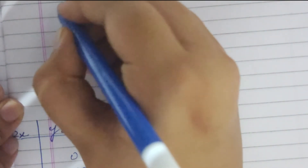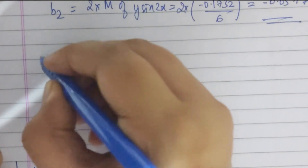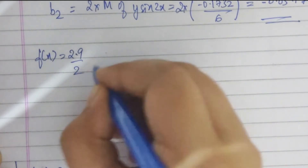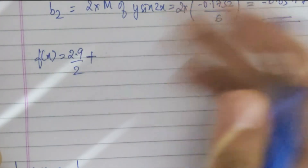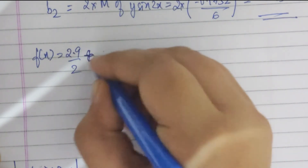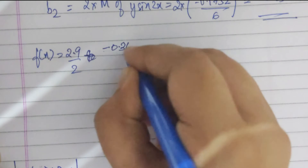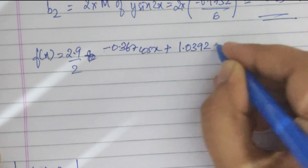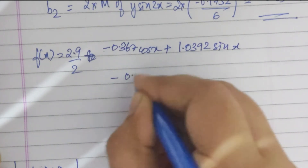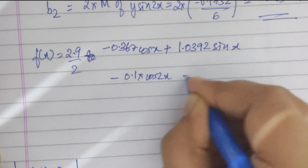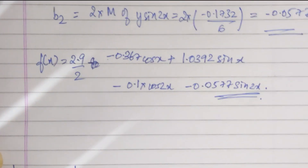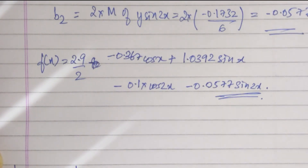The final step is placing the computed values into the main equation. f(x) = 2.9/2 − 0.367·cos(x) + 1.0392·sin(x) − 0.1·cos(2x) − 0.0577·sin(2x). Sorry for the handwriting in this last video — I was a little sleepy. Good night!